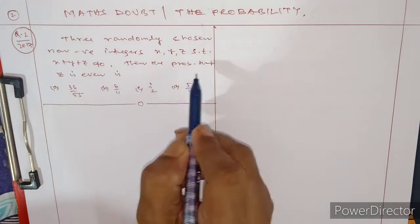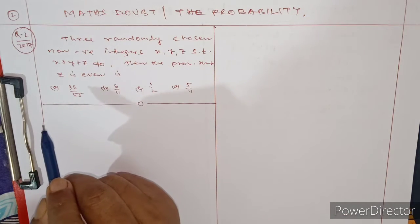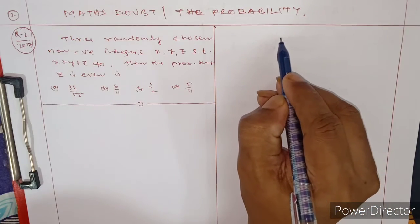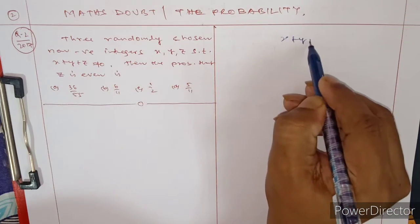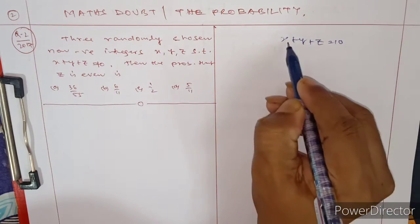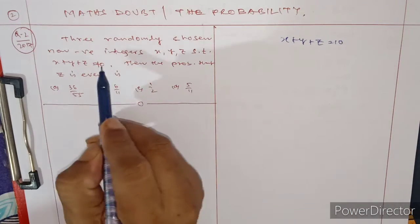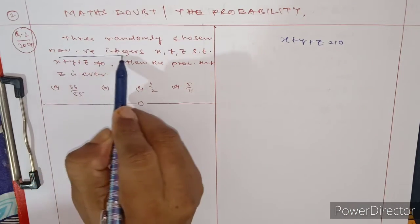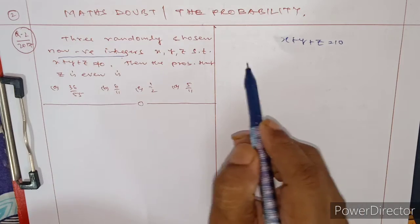The conditions given are x + y + z equal to 10, and here given are non-negative integers. So that means when x + y + z equal to 10 for non-negative numbers, we need to find the total possible solutions.